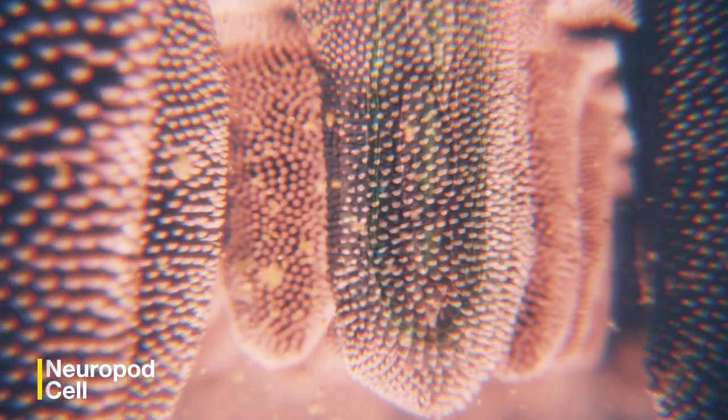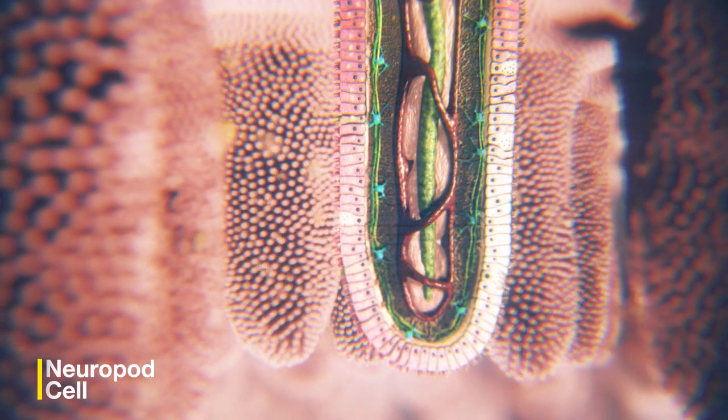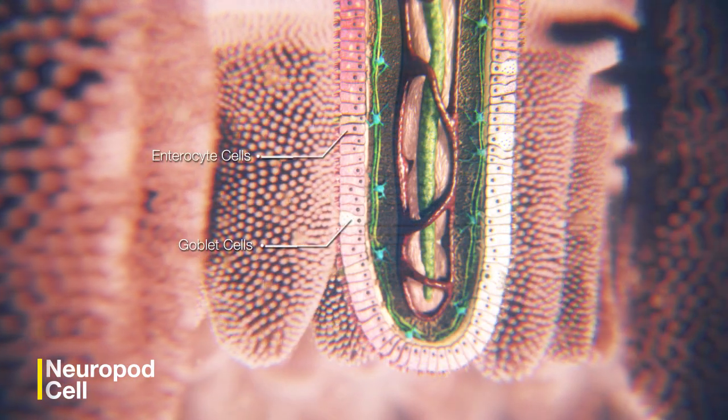Each villus is lined with a single layer of epithelium. This layer is made up of different cell types.